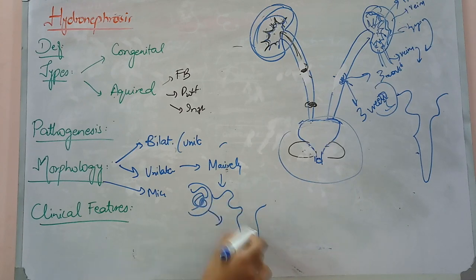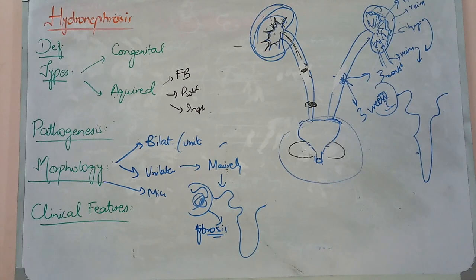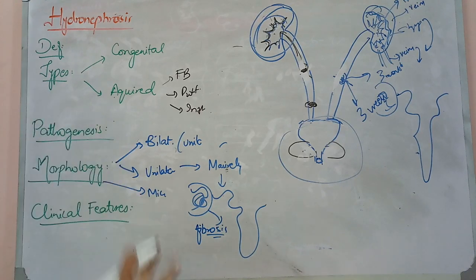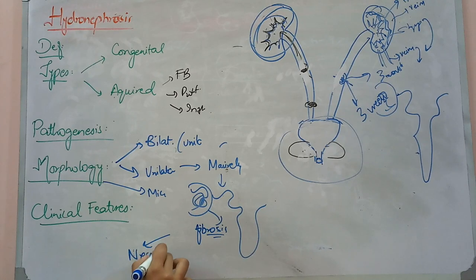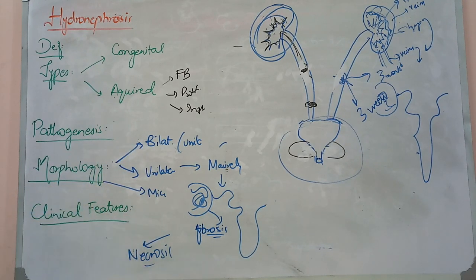When cells are damaged, they are eventually replaced by fibrous tissue — the renal parenchyma undergoes fibrosis. If there is a sudden obstruction, there may be cell death or necrosis rather than just atrophy and fibrosis. In summary, you need to know the general information about hydronephrosis and be able to describe it in terms of bilateral versus unilateral, and gross versus microscopic appearance.